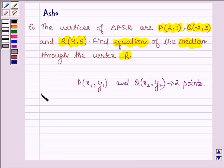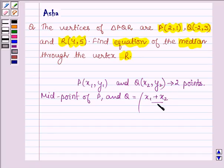Now the midpoint of these two points P and Q is given by ((x₁ + x₂)/2, (y₁ + y₂)/2). So this is the first idea.